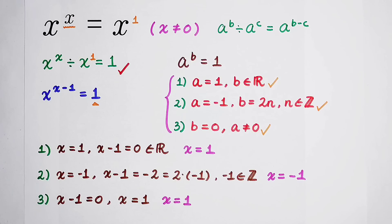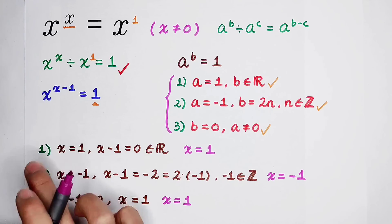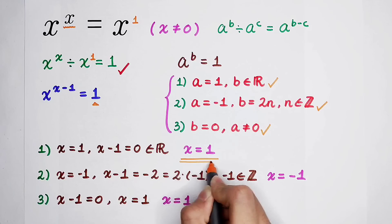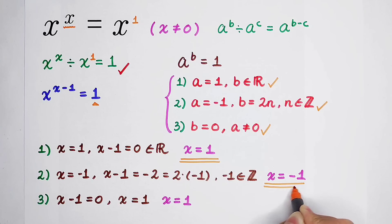Now, x is equal to 1 is a root. But you'll find out that in the first case and in the third case, x is equal to 1, x is equal to 1. These two roots have the same value. So there are only two roots of this equation.